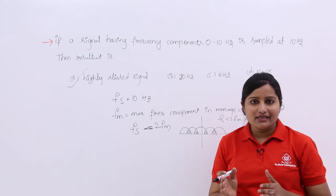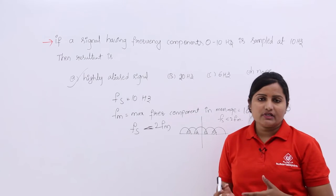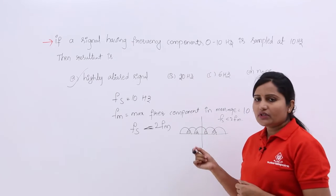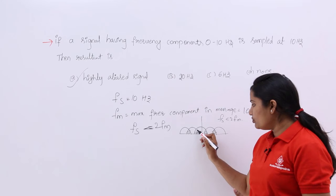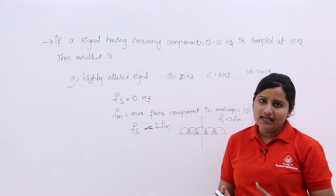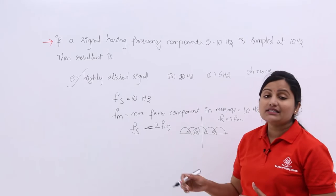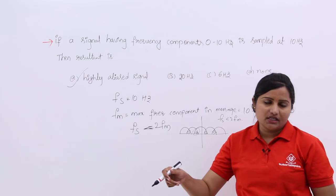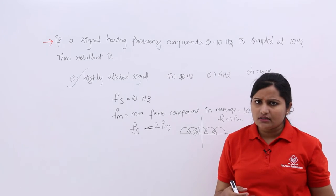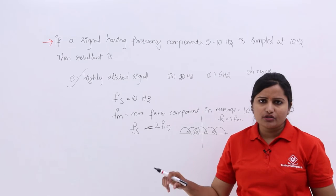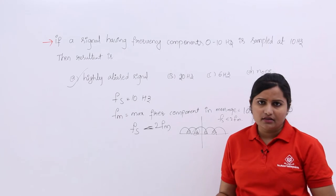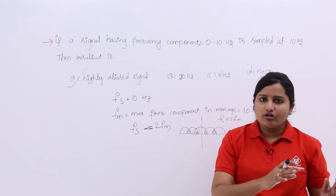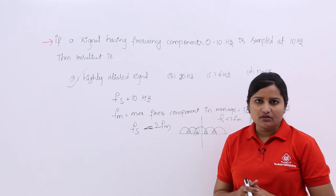This is a very important case of sampling. You will get many problems related to undersampling and aliasing. To remove or overcome this aliasing effect, you need to use anti-aliasing filters, or you need to make FS greater than 2FM — just by changing your sampling frequency. In practice, you generate the sampling pulse using oscillators. By increasing the sampling frequency, you can remove this aliasing effect.